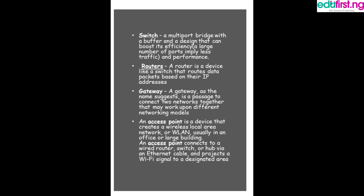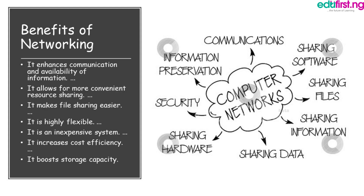The gateway, as the name suggests, is where packets will pass through. An access point is a device that creates a local area network wirelessly — it creates a WLAN and is usually used in offices or large buildings.